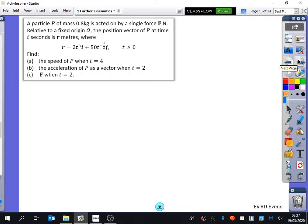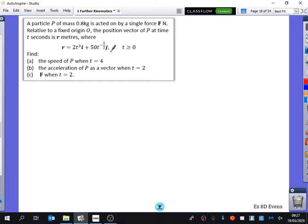So we'll just do an example. You'll see here that it's written in i and j. We're going to immediately change that to column vectors, just because that's the way that we like to do things. And it starts talking about the particle of mass 0.8. If they ever give you mass in these kinds of questions, they're probably going to be talking about a force later on, because of force equals mass times acceleration, because of F equals ma. Oh, yeah, there they are. They're talking about a force here. Relative to a fixed origin O, the position vector at a time t seconds is r metres, where r equals 2t cubed in the i component, and 50t minus 12 for the j part. And for part A of the question, they want us to find the speed of p when t equals 4. So I'm going to differentiate it to find out what the velocity is.